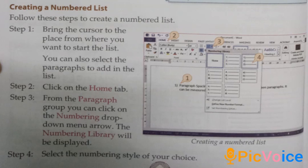Creating a Numbered List. Follow these steps: Step 1: Bring the cursor to the place where you want to start the list. You can also select the paragraphs to add to the list. Step 2: Click on the Home tab. Step 3: From the Paragraph group, click on the Numbering drop-down menu arrow. Step 4: The Numbering library will be displayed. Select the numbering style of your choice.